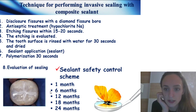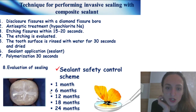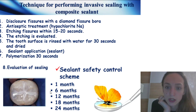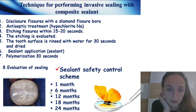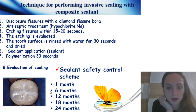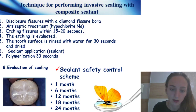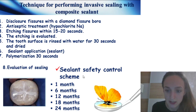Technique for performing invasive sealing with composite sealant: disclosure of fissures with a diamond fissure bur and antiseptic treatment, then etching fissure within 15–20 seconds; if using glass ionomer cement, use conditioner step. The etching is evaluated, the tooth surface is rinsed with water for 30 seconds and dried. Sealant application and polymerization for 30 seconds. Case after sealing teeth.